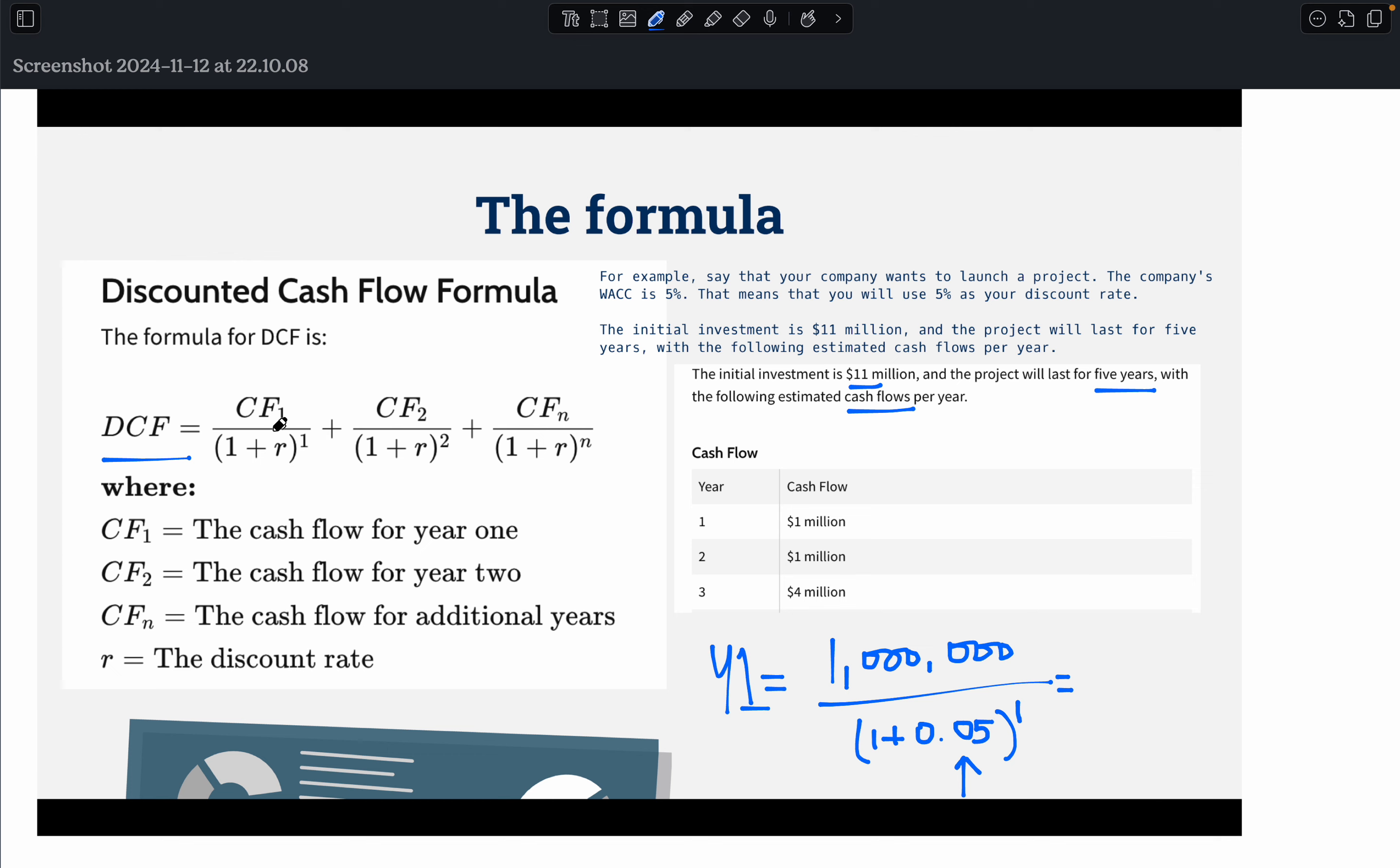So cash flow, you take the cash flow and you divide it by the discount rate multiple. And how do you get the multiple? You take one, you do one plus the discount rate, which is the r, one plus discount rate to the power of the number of years, which is one. So in this example, for year one, you would take the cash flow, which is 1 million, 1 million and divide it by one plus 0.05 to the power of one.